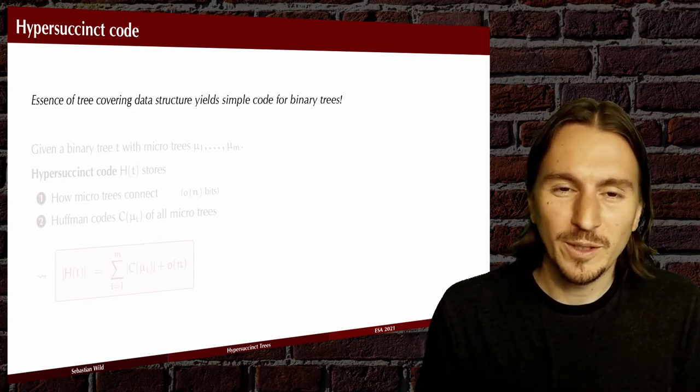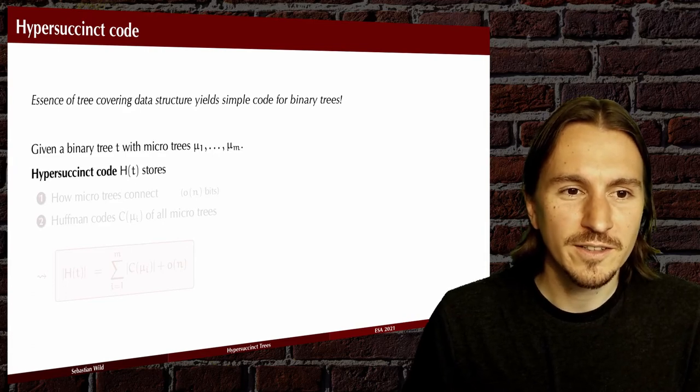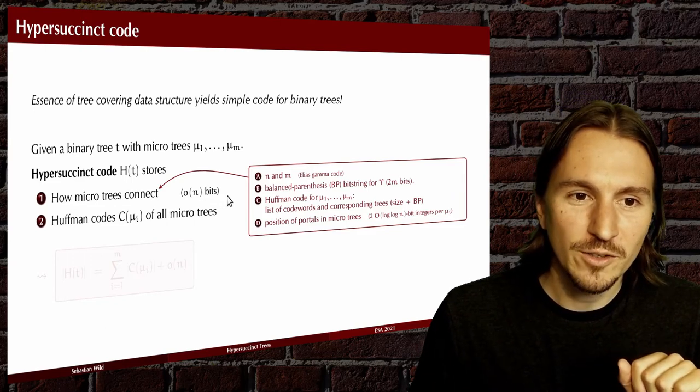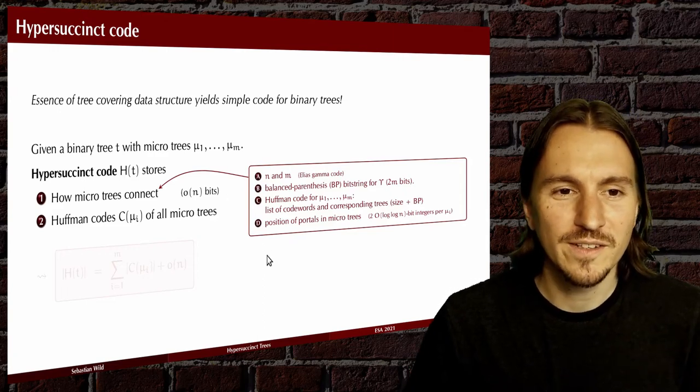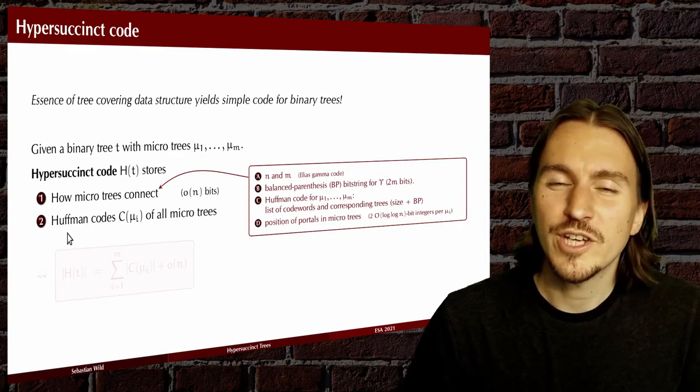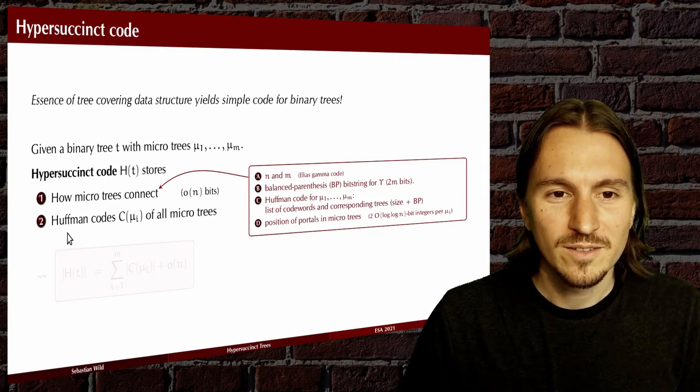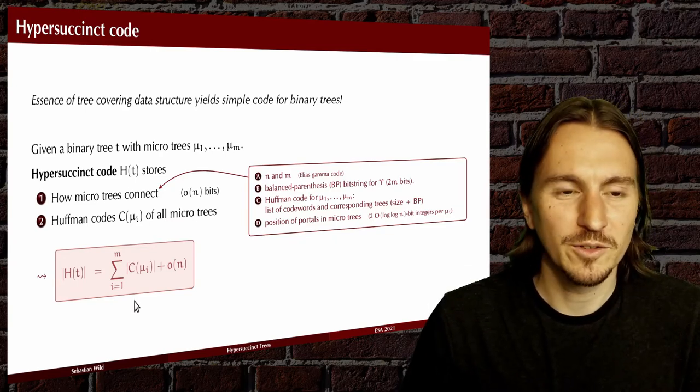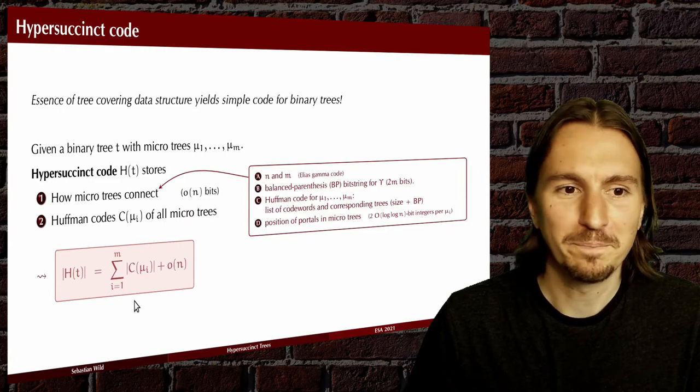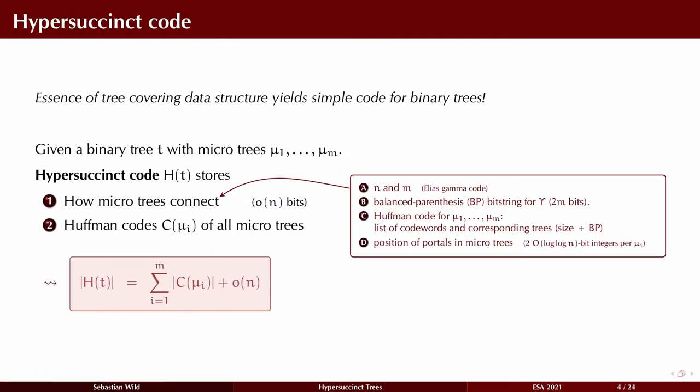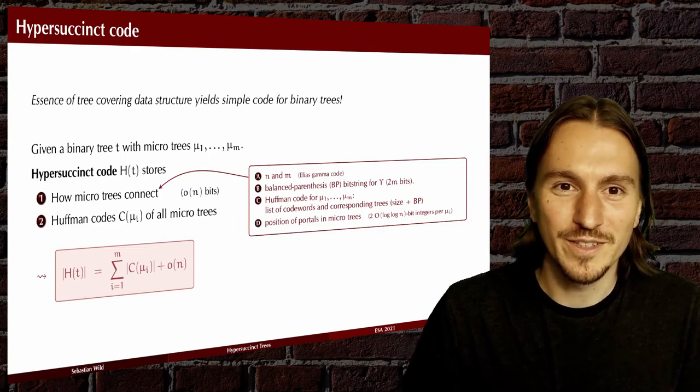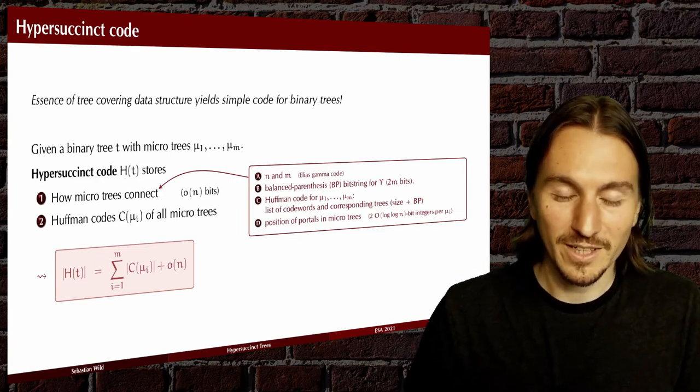If we're only interested in compressing trees, then we can take the fairly complicated constructions in a tree covering data structure and simplify it to this simple code. We store two things about the tree. We store how the micro trees connect. That only needs little o of n bits of space. Here's spelled out how to do that in detail, but this is not relevant for the talk. And we store the shapes of all the micro trees using a Huffman code. That's all there is to it. And that gives us a code that stores a tree using whatever it takes to spell out the shapes of all the micro trees plus the little o of n. And this code can be augmented into a data structure using exactly the same techniques as in tree covering. And all the contribution of our paper is to precisely analyze this code for many different distributions of tree shapes. And that gives us our main result.